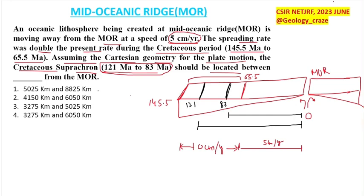As we know, distance equals speed multiplied by time. We have three conditions. The first is from 0 to 65.5 Ma, where speed is 5 cm/yr — we calculate this distance first. At 65.5 Ma, speed changes. Then we calculate the next segment, and after that the part up to 121 Ma.